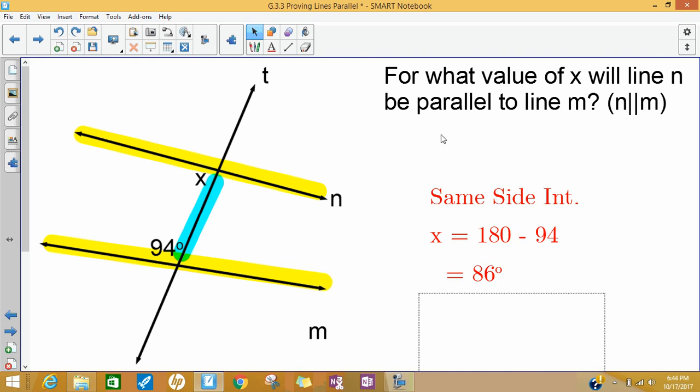It's very similar to the ones we've been doing, the question's just phrased in a different way. The last lesson I gave you two lines and told you they were parallel, used the relationships to find some values. This time I'm asking you, what values would you need to make the lines parallel? In this case, this angle needs to be 86 degrees in order for these two lines to be parallel.